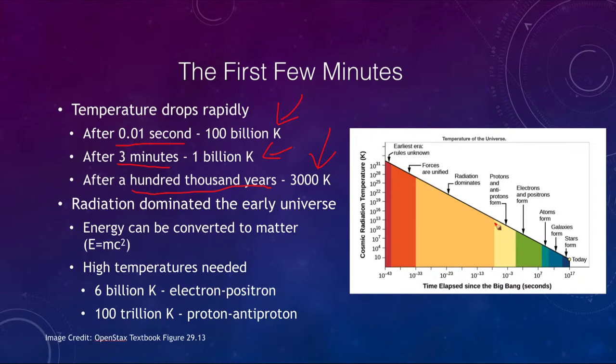Radiation dominated the universe for that very earliest stretch, going out to about this range we can see. It isn't until we start to form particles and atoms that radiation becomes less and less important in the universe. We also know that energy can be converted to matter by Einstein's equation E = mc².